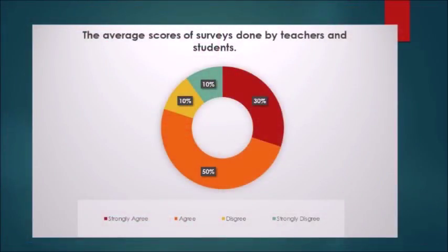Looking at the survey results, an average number of respondents agreed that student engagement and positive teacher relationships were present in their classroom. Only one or two respondents strongly agreed or disagreed. The majority of the secondary responses were 'disagree,' indicating that most did not emotionally connect with their students, and students did not emotionally connect with their teachers.